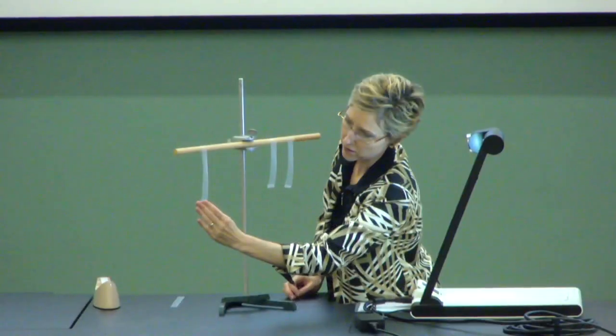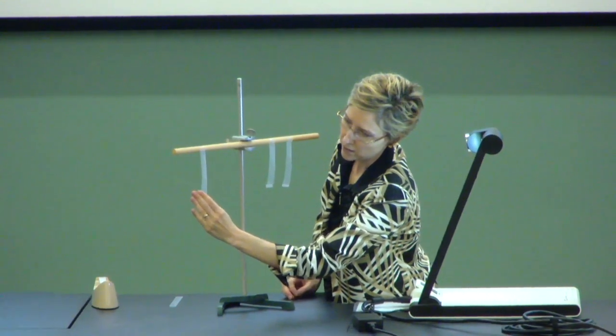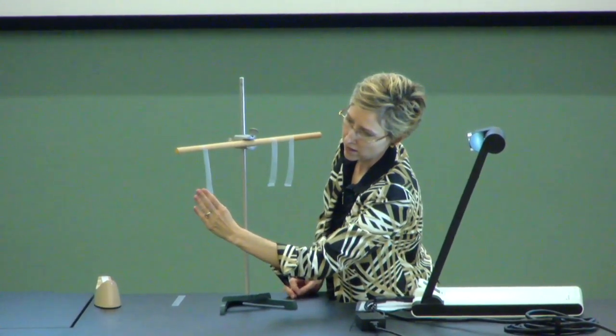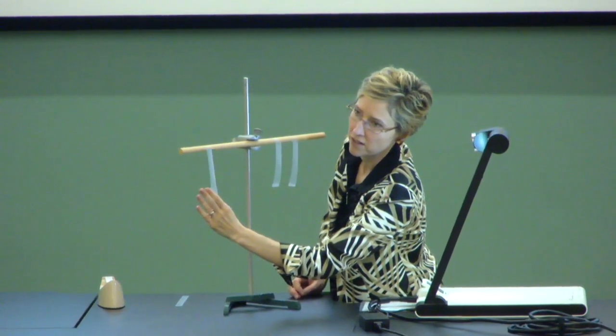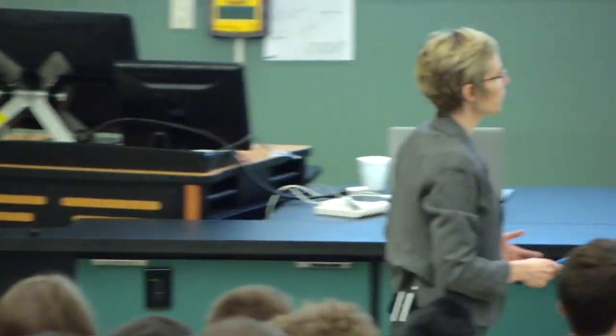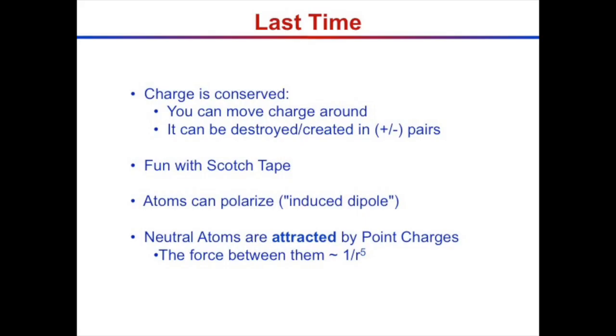We saw there was an interaction between my hand and the charged tape — it was attractive. Do you remember why? The tape was charged, I was not charged. There was an induced charge within the hand — an induced polarization. When my hand got close enough, there was an induced polarization. Neutral atoms are attracted by point charges, and the force between them goes like 1 over r to the 5th.